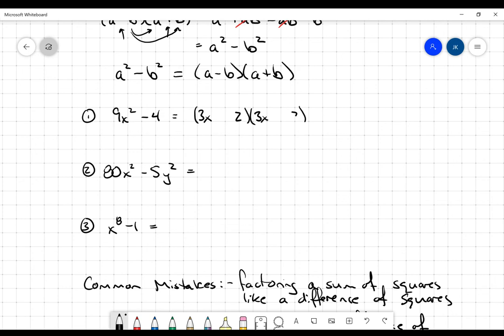And 4 is also a perfect square, its square root is 2. So this is going to be 3x minus 2 multiplied by 3x plus 2. There we go, it's as easy as that.